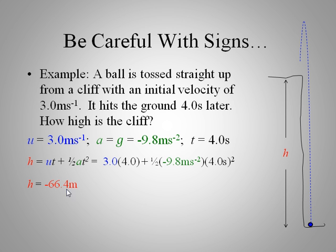So the final height is negative. So it's negative 66.4 meters. Significant digits. Well, it would be 62. So we want to report 66 meters. It would be the distance from the bottom to the top.